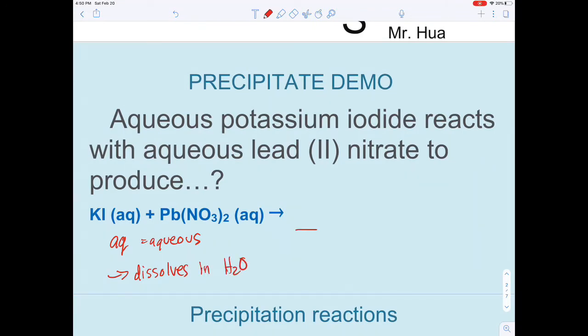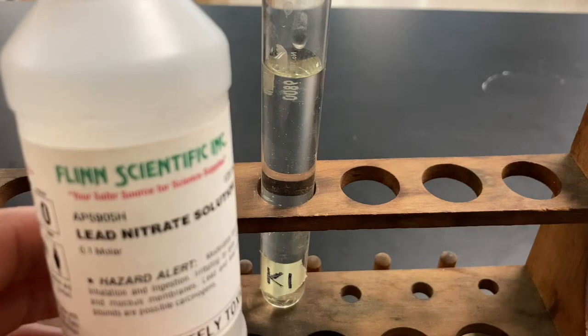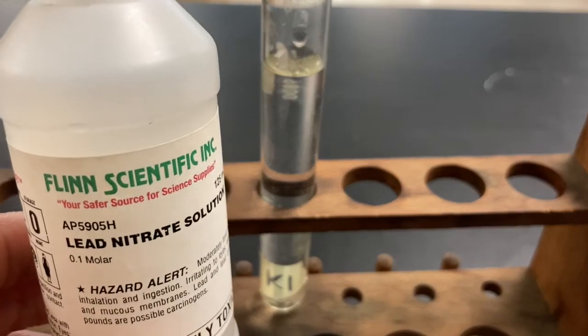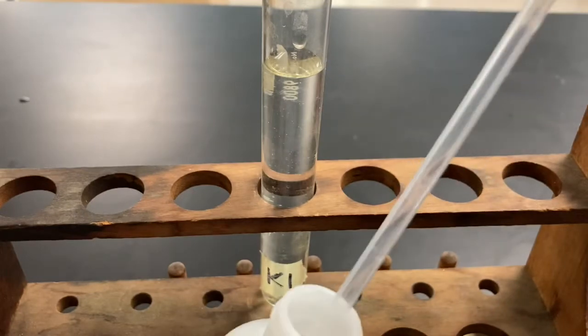We'll see what two products are formed. Here I have my aqueous potassium iodide, and to that I'm going to add some lead nitrate which you see here. Let's see what happens when these two chemicals react.